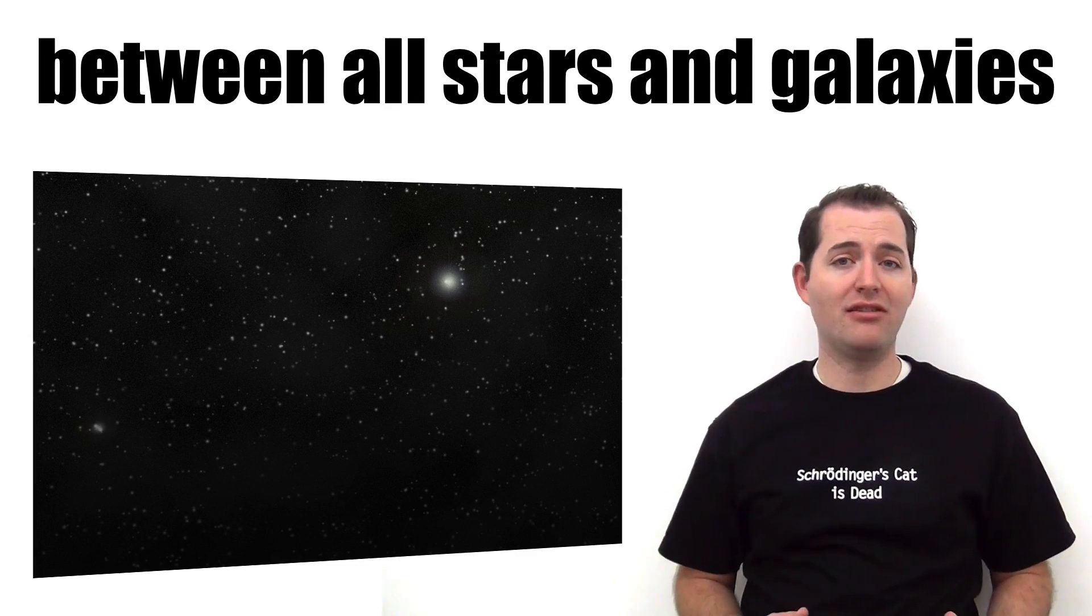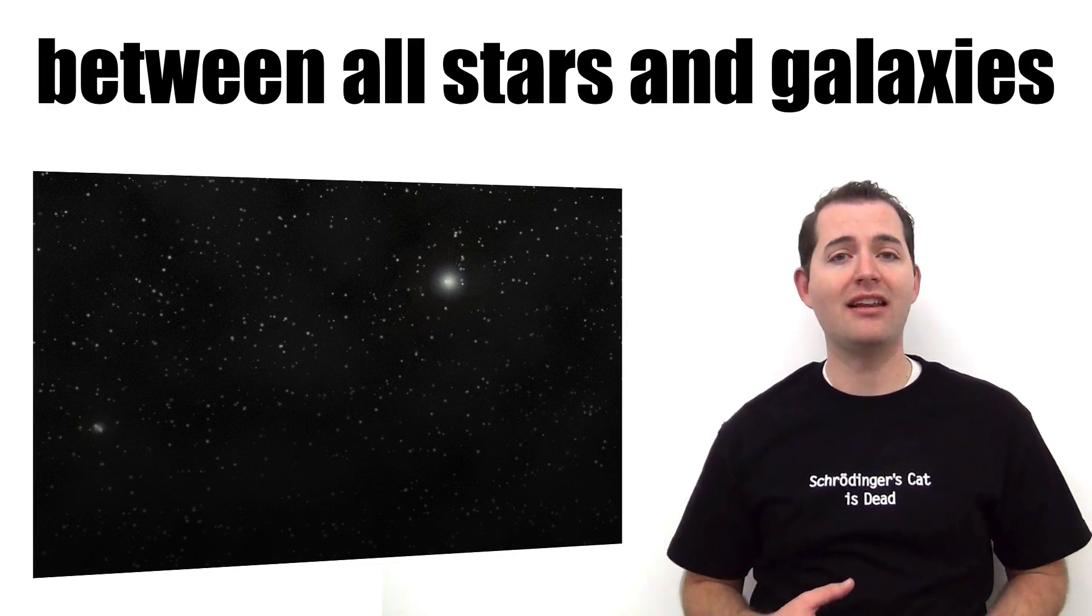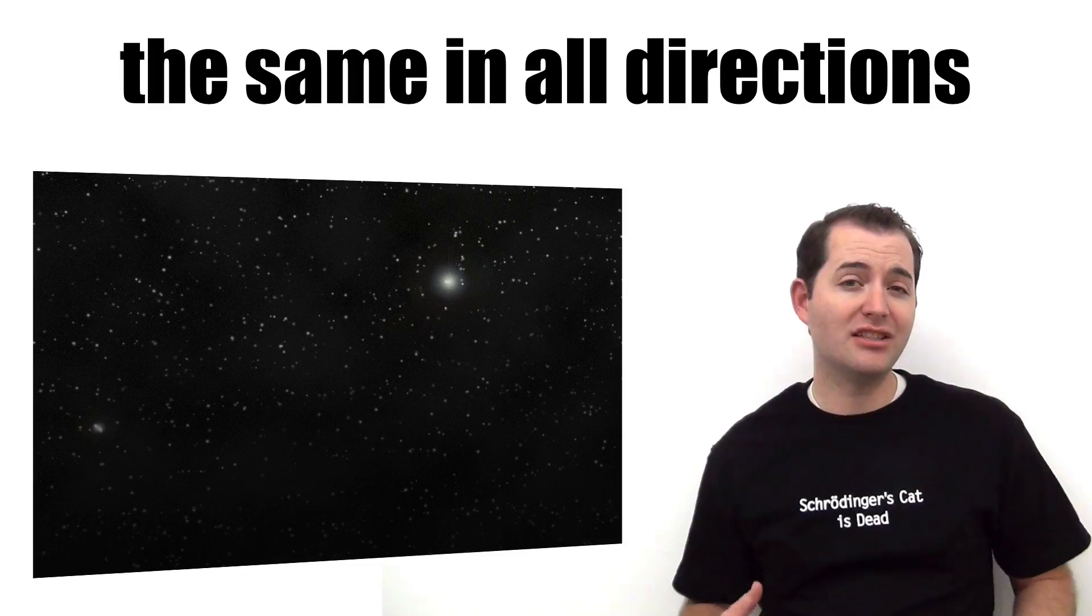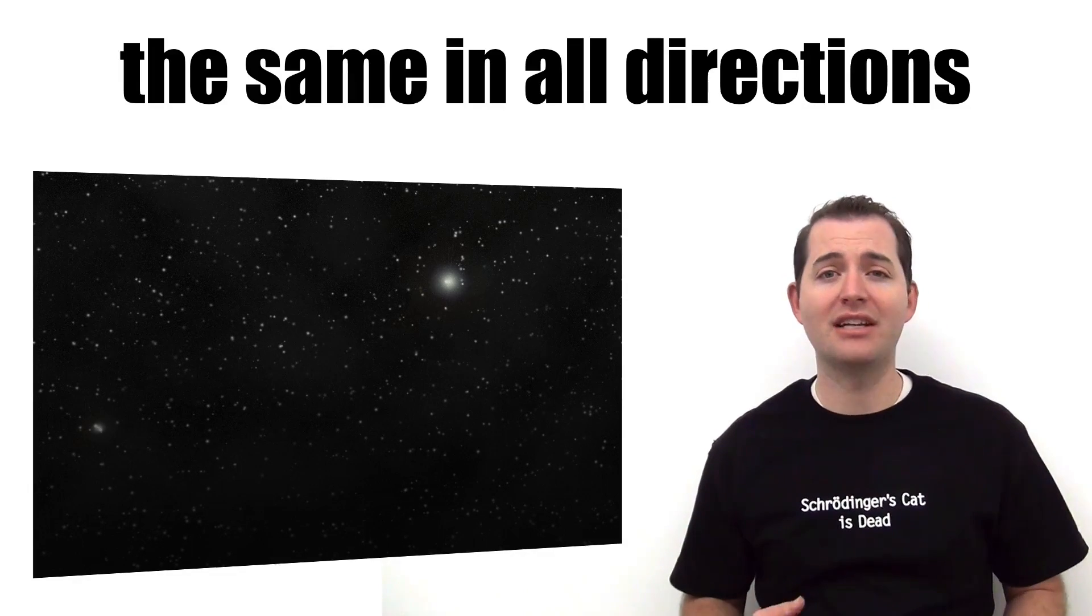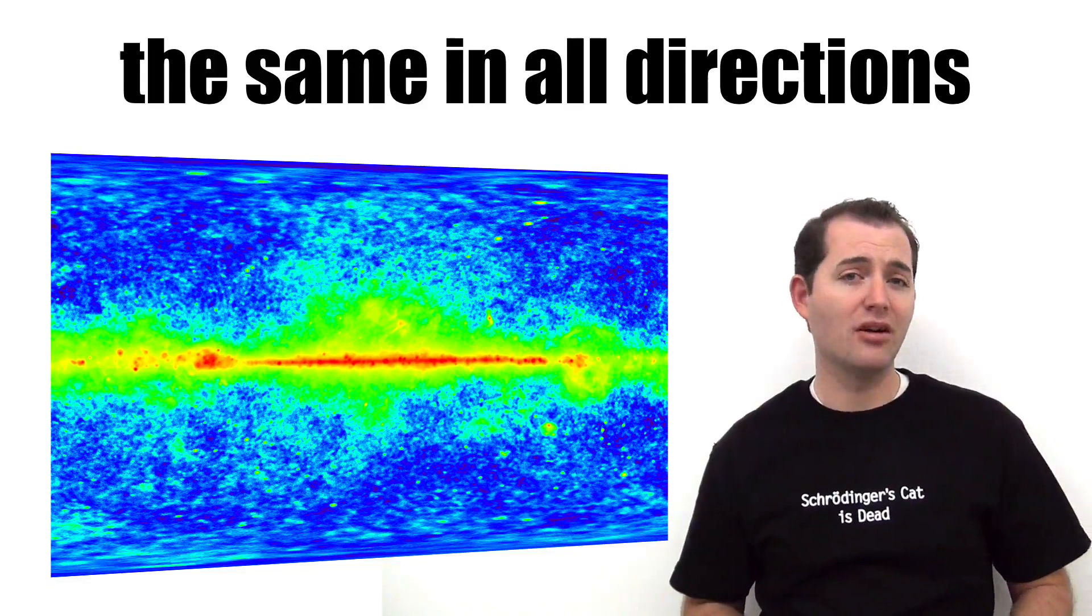The CMB can be detected in the background or in the space between stars and galaxies using a radio telescope. This radiation is almost the same in all directions and is not associated with any particular object. It also shows up as a faint glow.